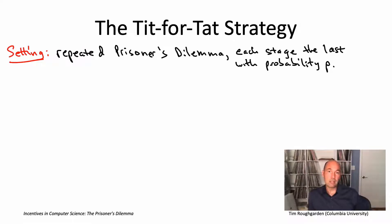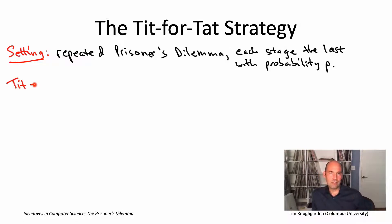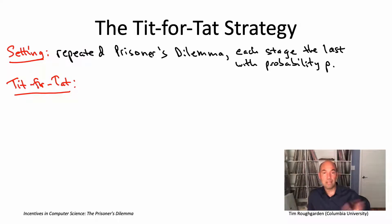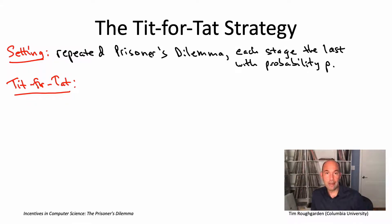Cooperation is a sensible thing to do. The plan is we're going to posit a particular, very interesting and natural strategy for Alice called the tit-for-tat strategy. Then we'll look at what Bob's incentives are — how should Bob respond if Alice is playing tit-for-tat? We'll see that what Bob should do is cooperate. So let's go through that derivation now.